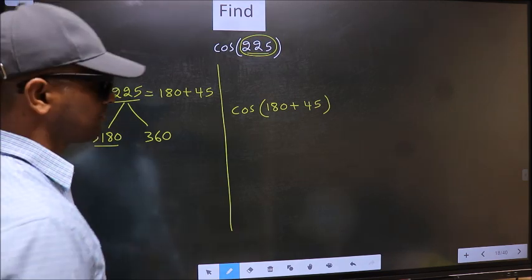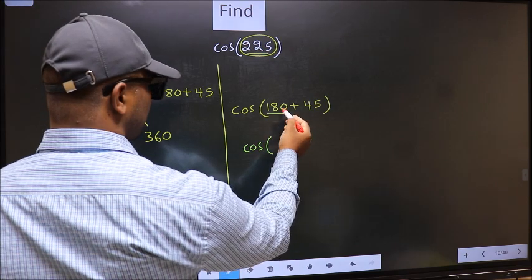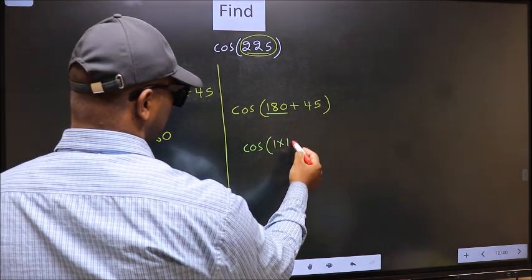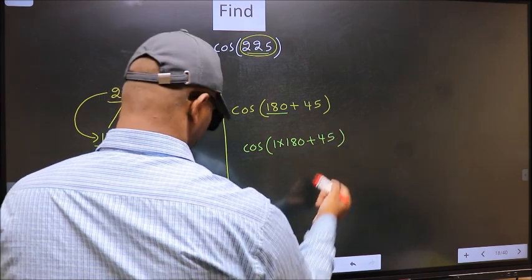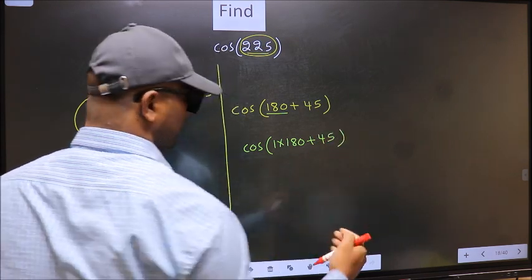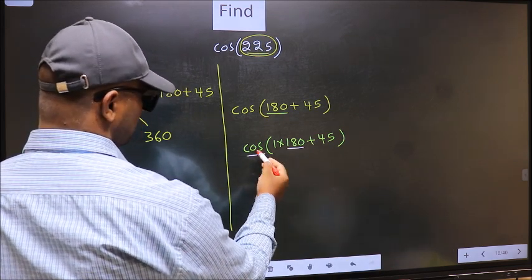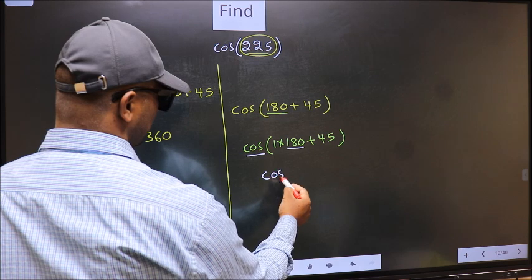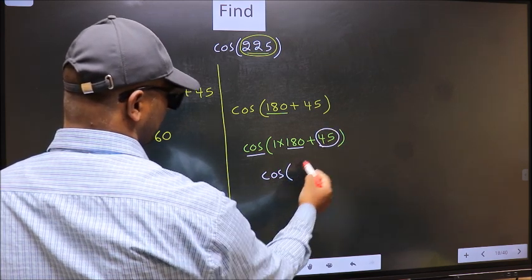Next, cos. In place of 180, now we write 1 times 180 plus 45. Here we have 180, so cos is not going to change. It will remain cos, and inside, we get this angle 45.